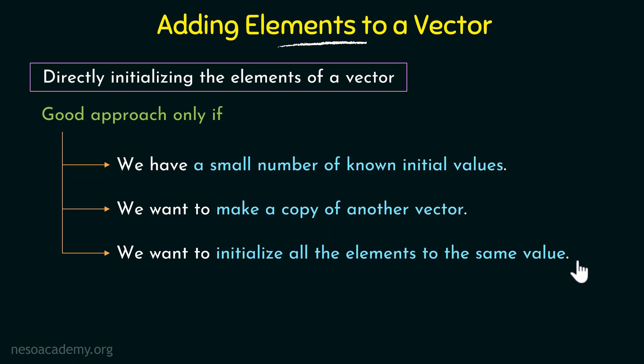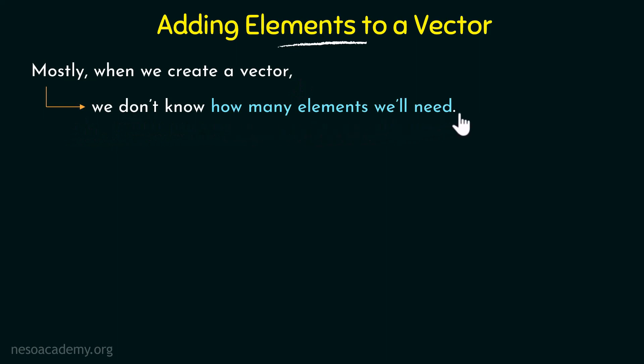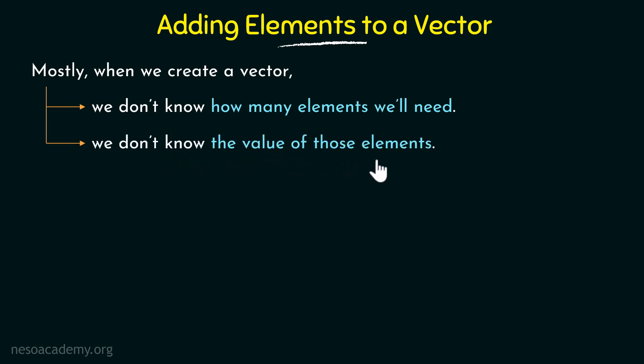For example, if we want 10 elements all with the same value, we specify the count of 10 followed by the initial value, and that value applies to all 10 elements. So in these kinds of cases, direct initialization is a good approach. But mostly when we create a vector, we don't know how many elements we'll need and we don't know the values of those elements.